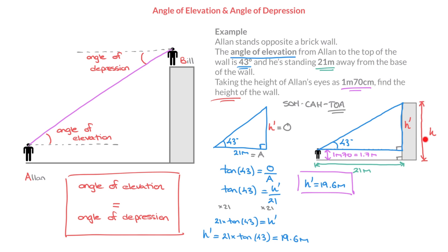Finally, using the fact that h — the total height of the wall — is equal to h prime plus 1.7 meters, we can state that h = 19.6 + 1.7. That leads us to h, the height of the wall, equals 21.3 meters. And that's the height of the wall.